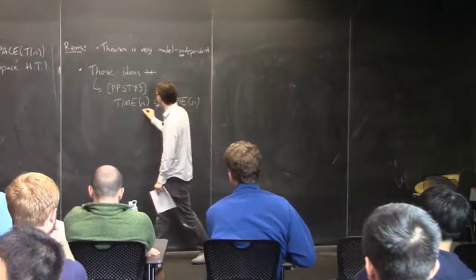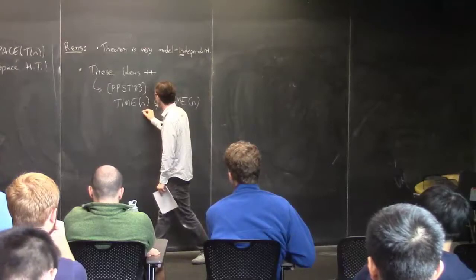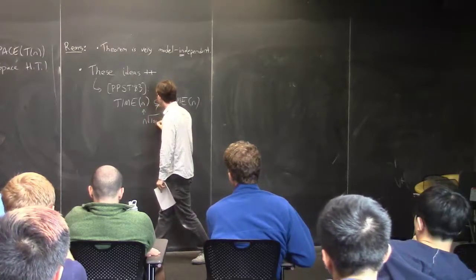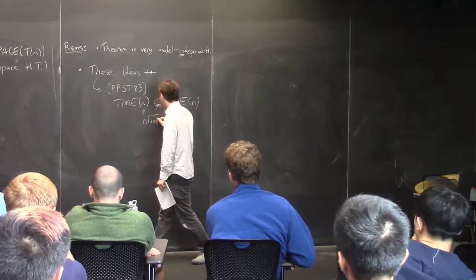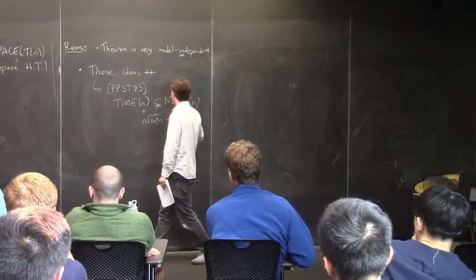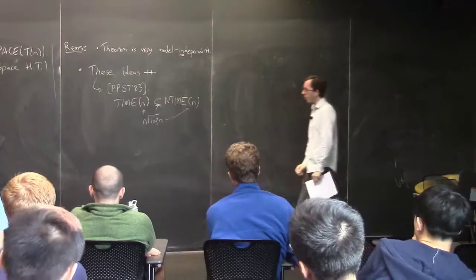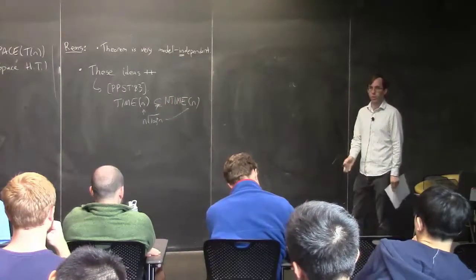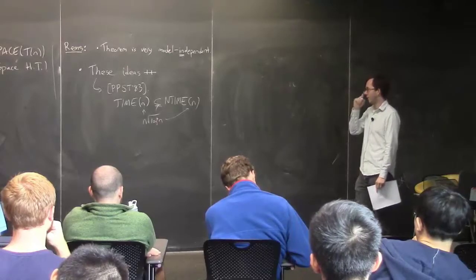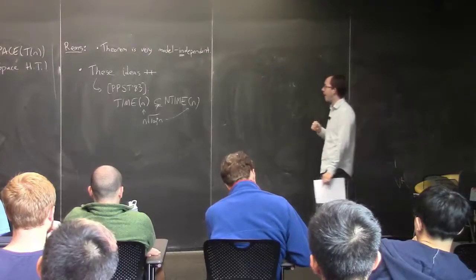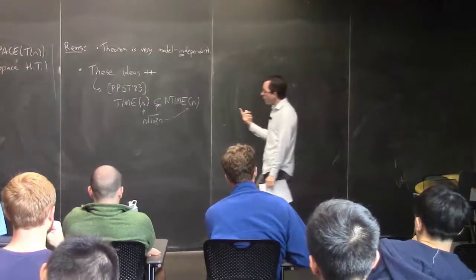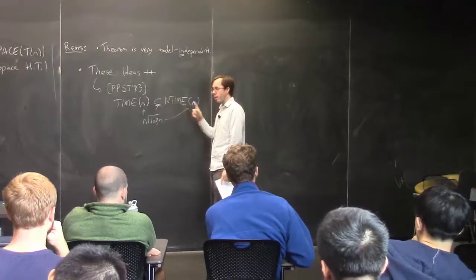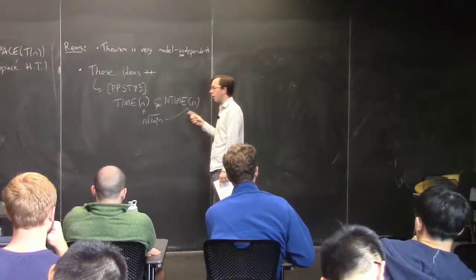In 2001, Santhanam actually improved this result to n · √(log* n) appearing in both places. But getting this up to n · log n would be a miracle. So that's pretty good.